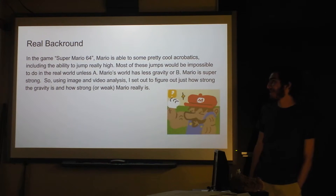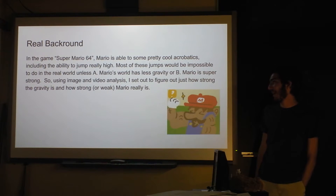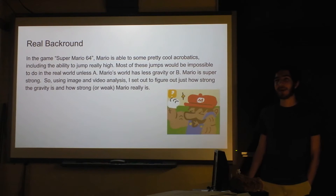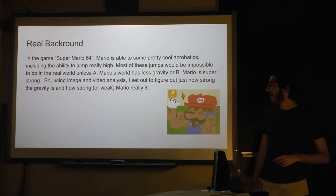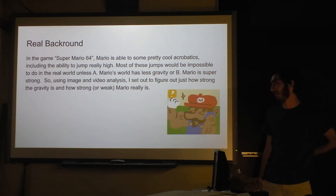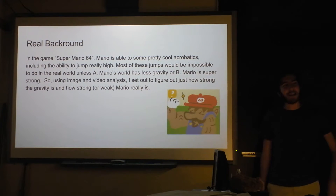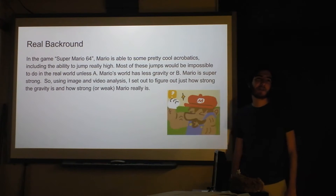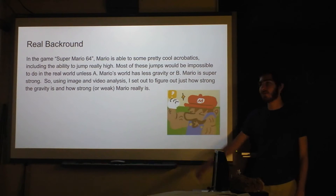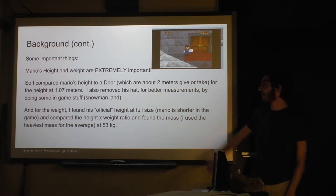In the game Super Mario 64, Mario is able to do some pretty impressive acrobatics. The biggest thing, of course, is just how high he can jump. And after doing the statistics, it's actually really, really high — most of the jumps would be impossible to do. So I either wanted to figure out how much energy he's using, or how much lower the gravity is, and how much energy it would take otherwise.